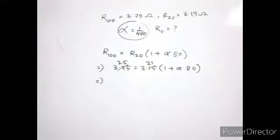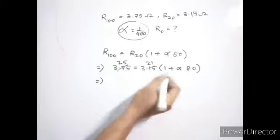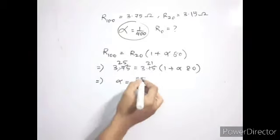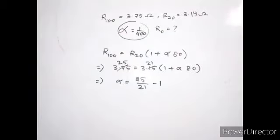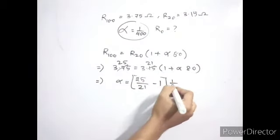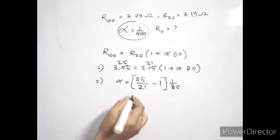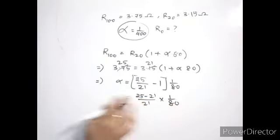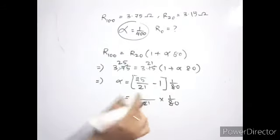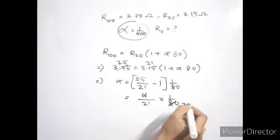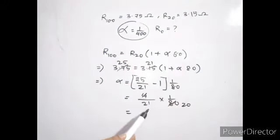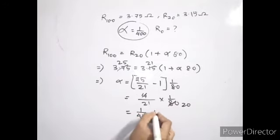Solving for alpha: 25 minus 21 over 21 gives 4 over 21, and dividing by 80 gives alpha equal to 4 over 21 times 1 by 80, which is 1 by 420 degrees Celsius inverse — something greater than 400 in the denominator.